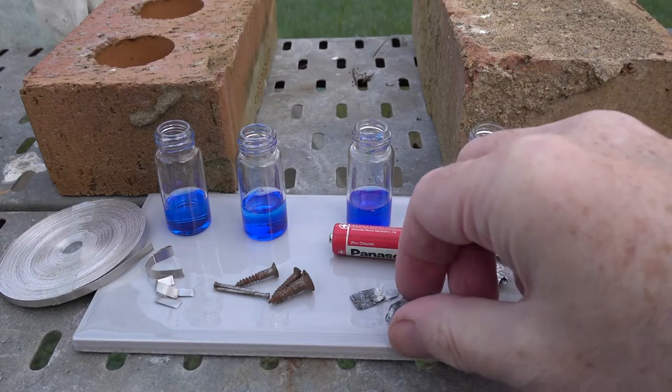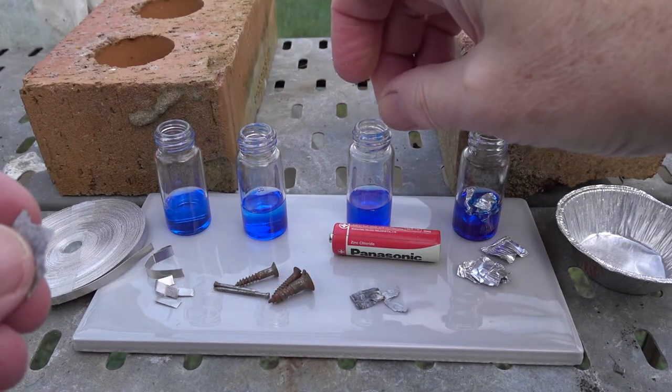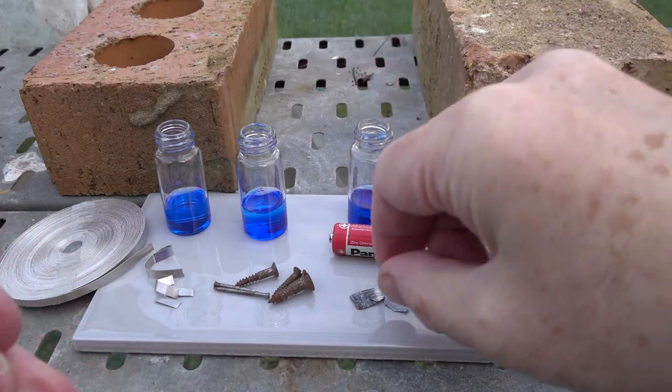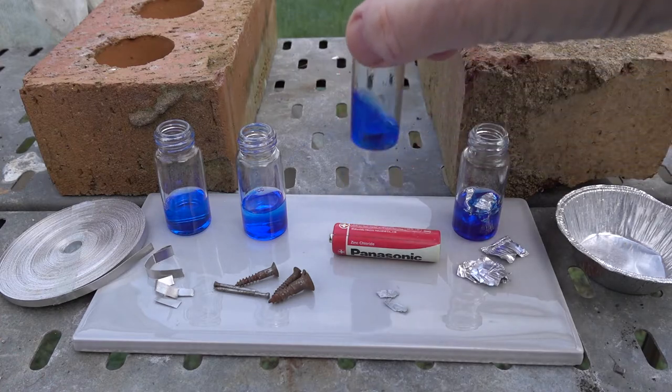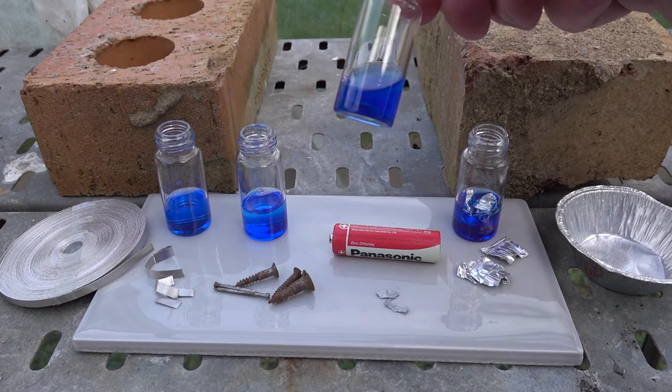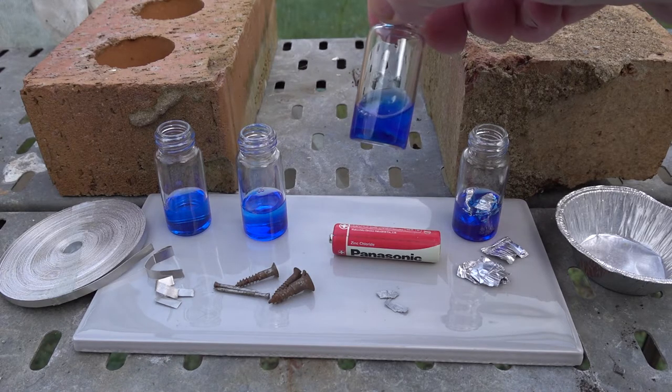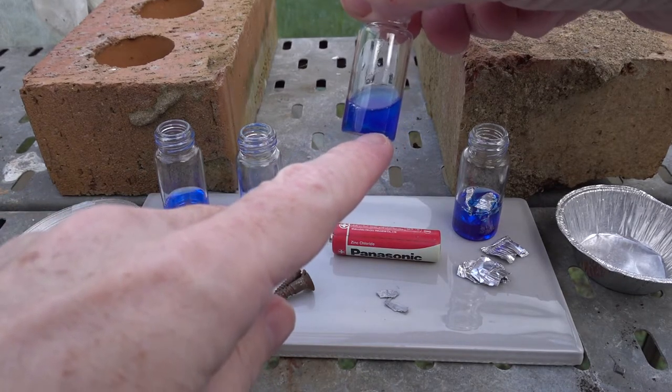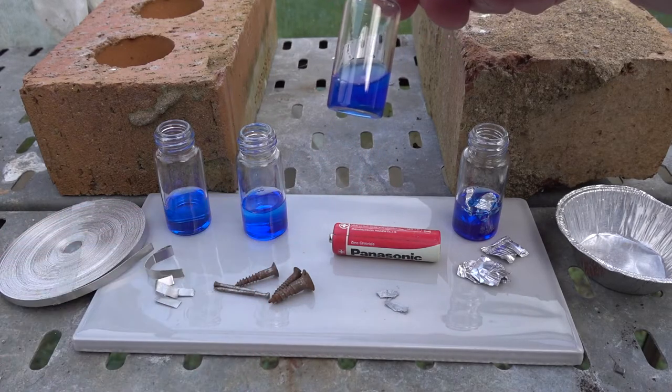Next, this is the zinc from the casing of a cell. We've just given it a wash with water. Just scrunch it up a little to put it in. Then it goes. Give it a little shake. And that one might need some time to get going but already there appears to be some activity with some very small bubbles being produced.